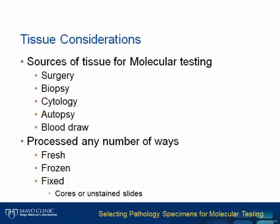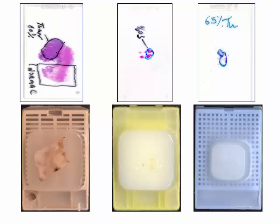Fixed tissue is by far the most common source of nucleic acid for molecular testing of solid tumors. A number of fixatives and fixation protocols are routinely used, and are also variables that need to be considered. Once tissue is fixed, there is more than one way to get nucleic acid from a tissue block — for example, taking cores from the block or scraping from unstained slides. This slide highlights the variability in the amount of tissue that may be available. The examples of H&E slides and tissue blocks range from large tissues from resection specimens on the left to different sized biopsies in the middle and right of your screen. Once the tissue is in this format, the molecular workflow really begins.